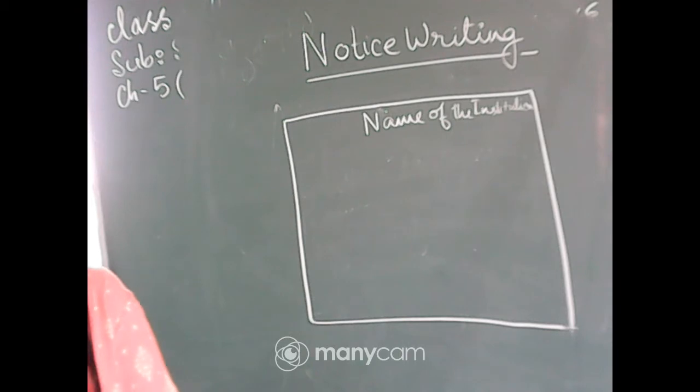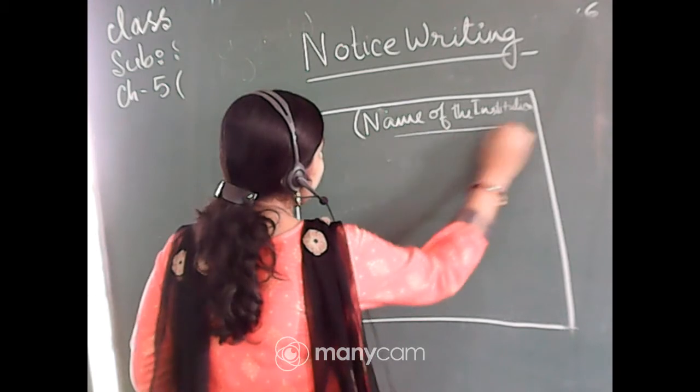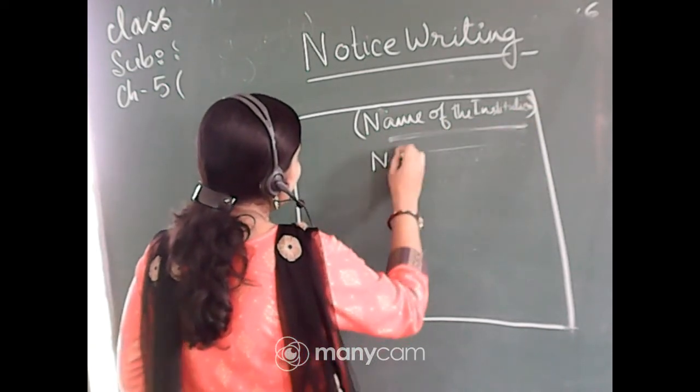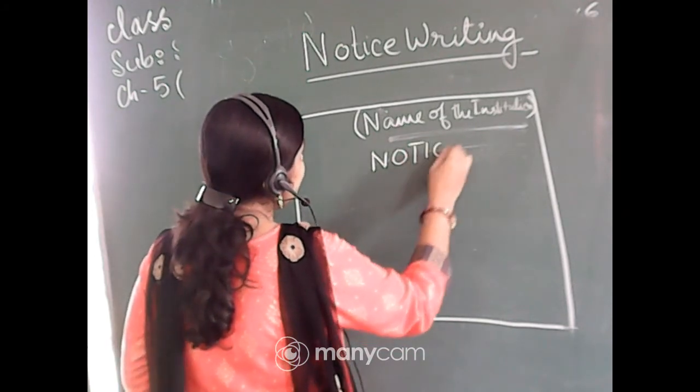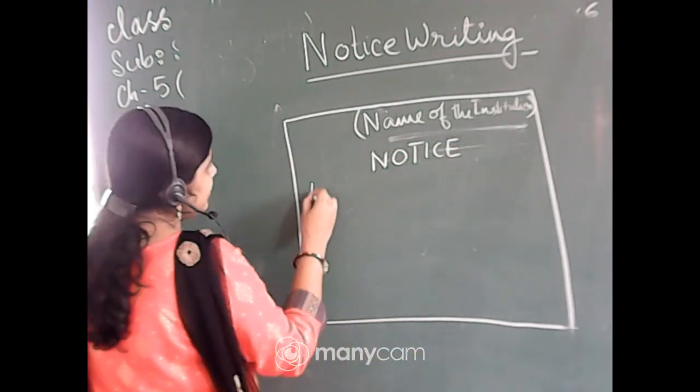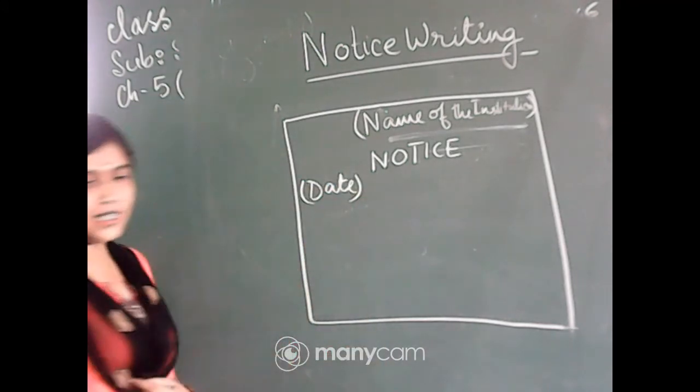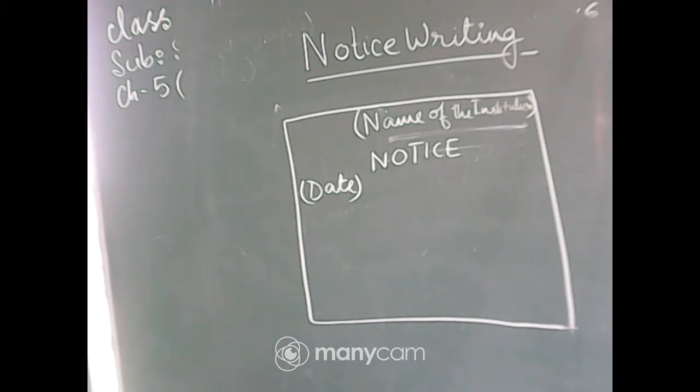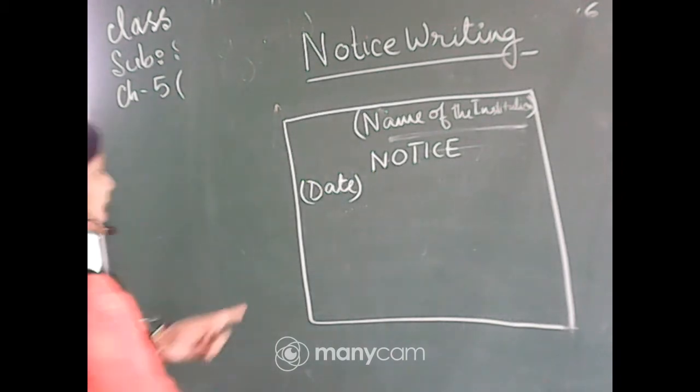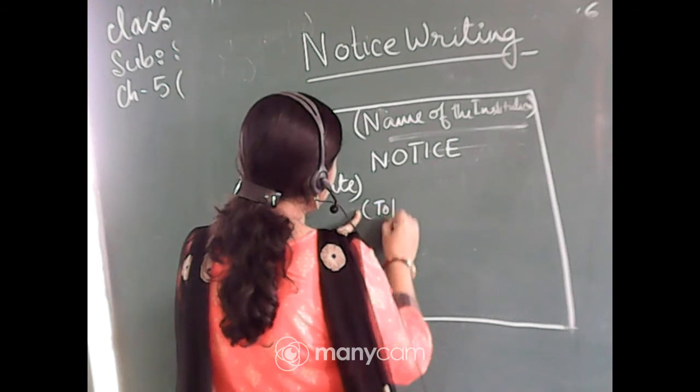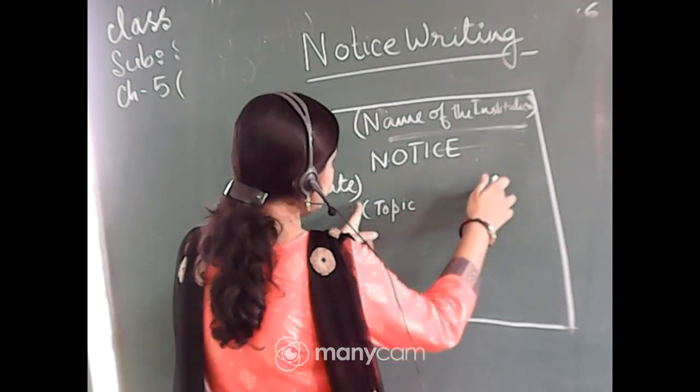So just let us come back to the class. Notice. You will write the name of the institution. Then you will write the word notice. It can be any name, but don't give an underline after it. Then write the word N-O-T-I-C-E in blocks. Then in this side write the date. Write the date in this side. The format which is given in your book, follow that format. And then write the topic of the notice in a central form. That means the topic of the notice has to be written with central indentation.